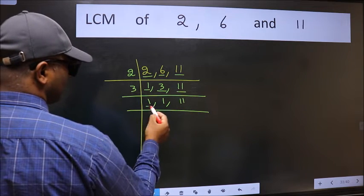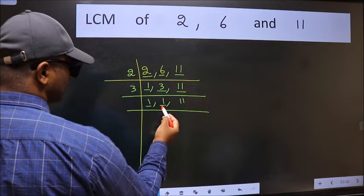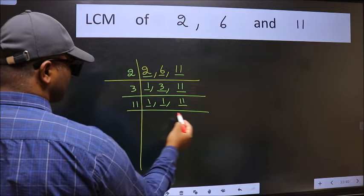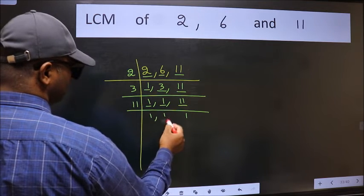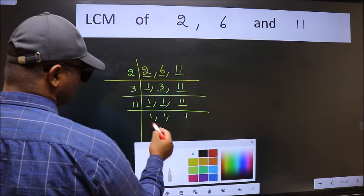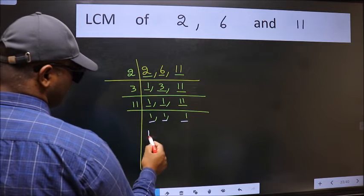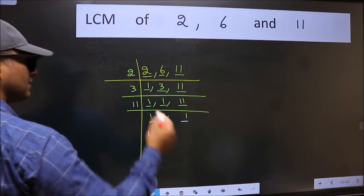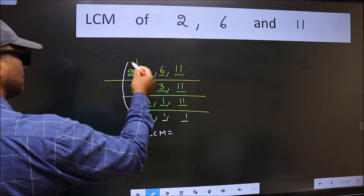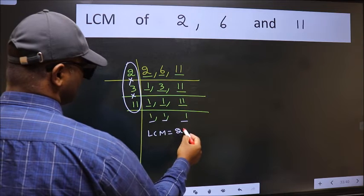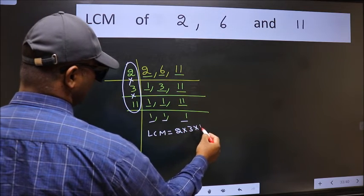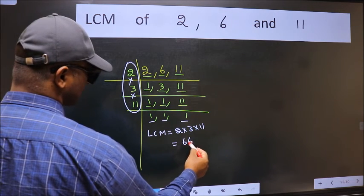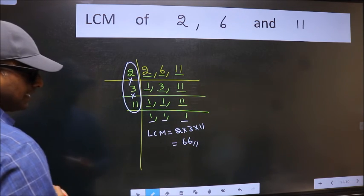Now we got 1 here and here, so focus on to the next number 11. 11 is a prime number, so 11 wants 11. So we got 1 in all the 3 places. So our LCM is the product of these numbers, that is 2 into 3 into 11. When we multiply these numbers we get 66, which is our LCM.